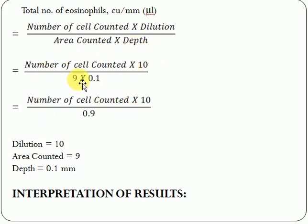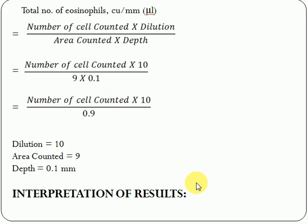So calculating: 9 × 0.1 = 0.9. The formula becomes: number of cells × 10 ÷ 0.9. Place the cell count you obtained into this formula, perform the calculation, and the result will be expressed in cells per cubic mm. Thank you for watching and see you in another video.